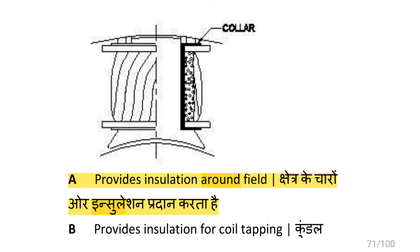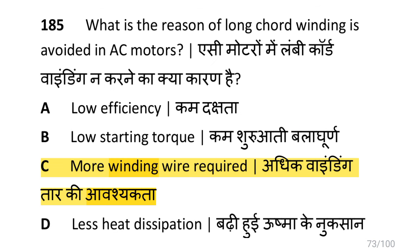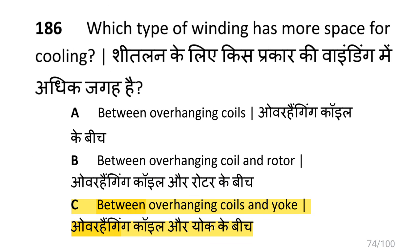The function of a collar is to provide insulation around the field. The type of winding wire used for submersible pump motors is PVC cover type. Long cord winding is avoided in AC motors because more winding wire is required.